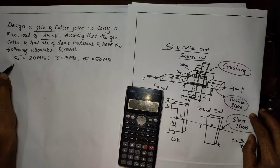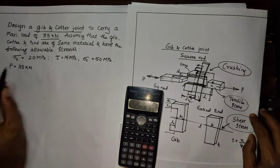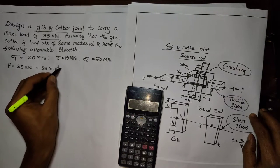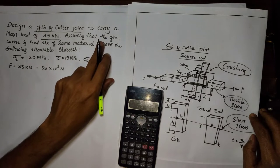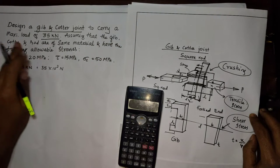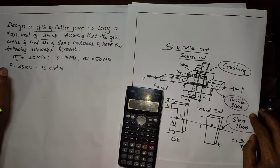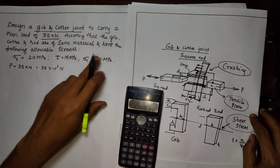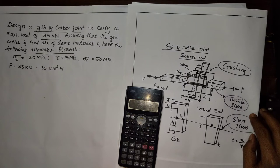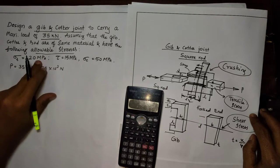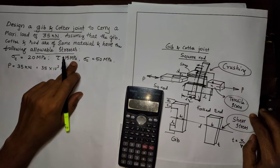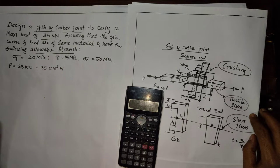Let P = 35 kN = 35 × 10³ N. Assuming that the gib, cotter, and rod — all three components — are made with the same material, so their stresses will be the same. The allowable stresses are: σT = 20 MPa, τ = 15 MPa, and σC = 50 MPa — all in Newton per millimeter squared, where 1 MPa = 1 N/mm².